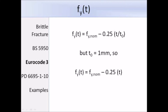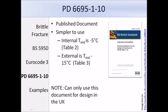Now I'm going to talk about the approach that I would recommend, which is to refer to the published document PD 6695 Part 1-10. This is the method I will use in the examples at the end of this lecture. The approach is definitely simpler than using the Eurocode document. There are two tables: Table 2 for internal, where the surface temperature is taken as minus 5 degrees Celsius, and Table 3 for external, where the surface temperature is taken as minus 15 degrees Celsius. It's worth pointing out that you can only refer to this document for design in the UK. For design of structures in other countries, you need to refer to the Eurocode document and the National Annex of that country.